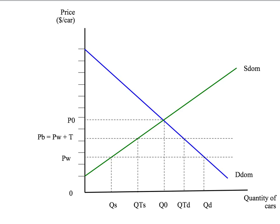What happens if the government puts a per unit import tax of level T in place? The tax will push up the price of imports as seen by domestic buyers, up to Pw plus T. They pay Pw to the rest of the world and pay the tax T to their own government when they import a good. Given that new higher price, domestic consumers wish to buy QTD units. Domestic producers also can sell their product at this higher price.